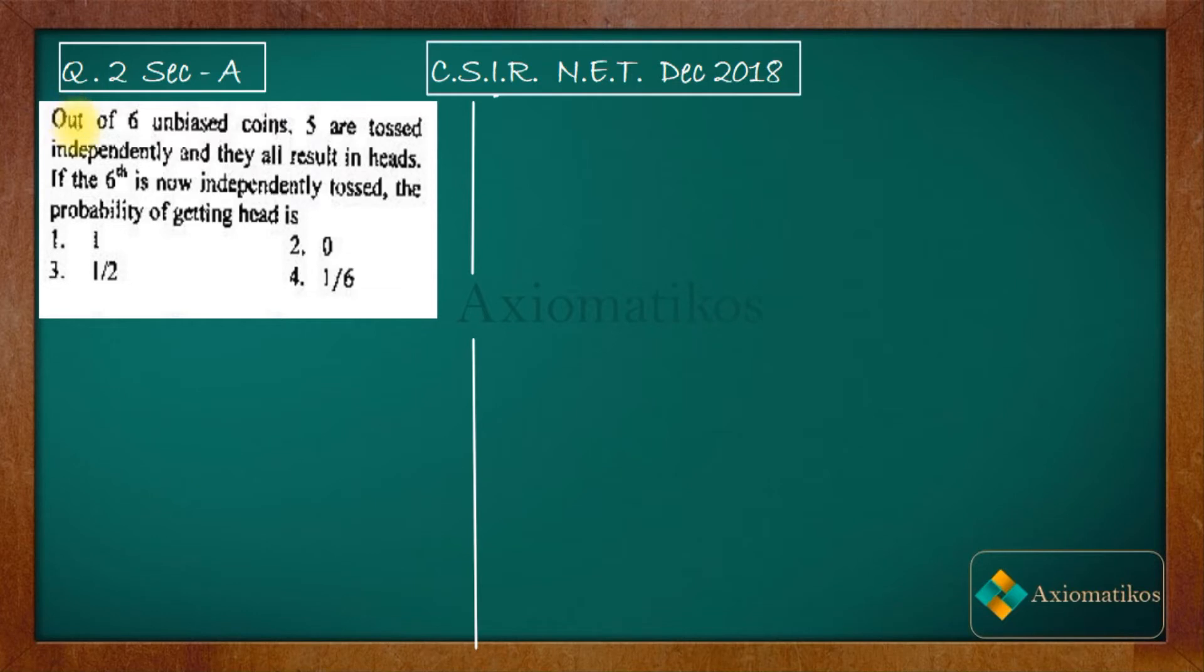Let's have a look. Out of six unbiased coins, five are tossed independently and they all result in heads. If the sixth is now independently tossed, the probability of getting head is... So you have to focus on this word 'independent' and then we will try to solve this problem.